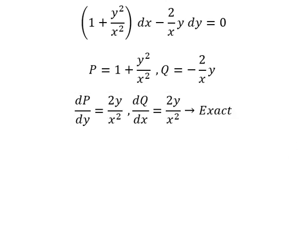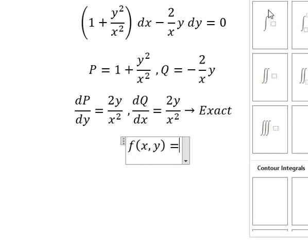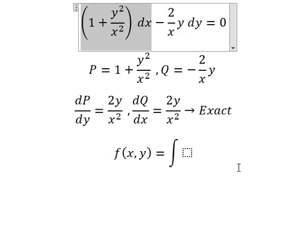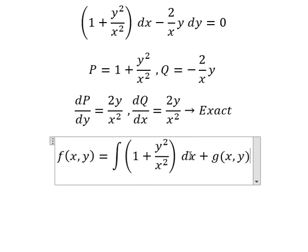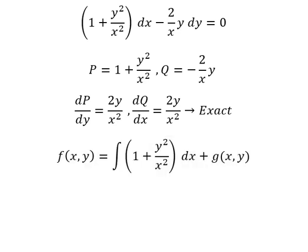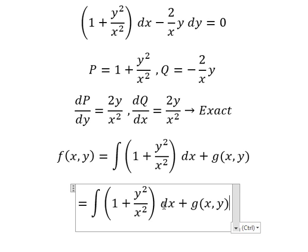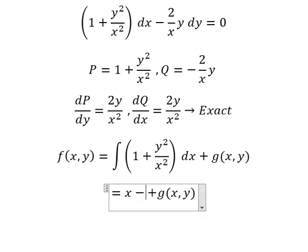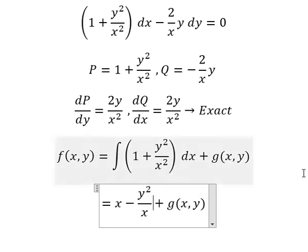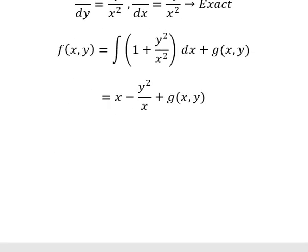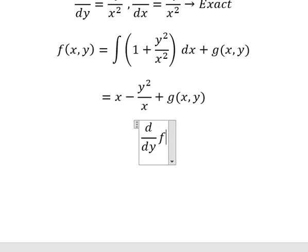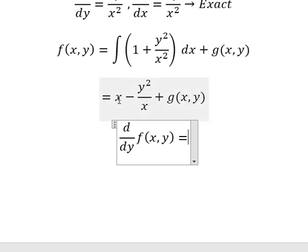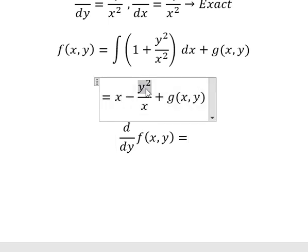Now we can set up the function f equals to the integral. I will choose this one plus g. The integration of number one for s gives us s; the next one is y squared over s. We need to find the first derivative of f with respect to y — this one we don't have y, this one we have two y.